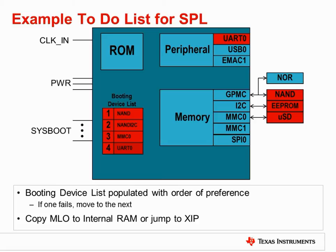For instance, in the diagram shown, the boot mode has been selected to first attempt to boot the uBoot or SPL from parallel interface NAND flash, but if that boot attempt fails, it will then attempt to boot using the I2C interface, and if that fails, will try an MMC boot and finally a UART boot.